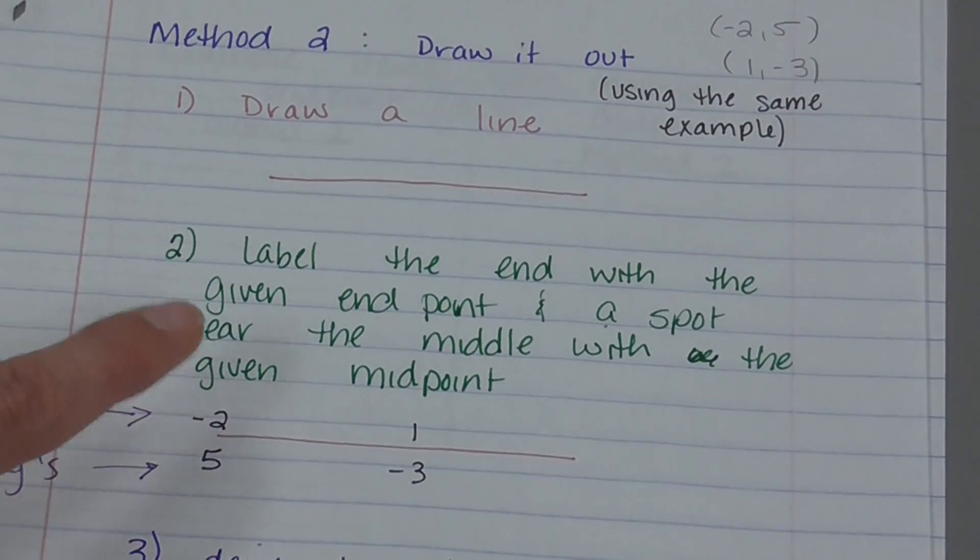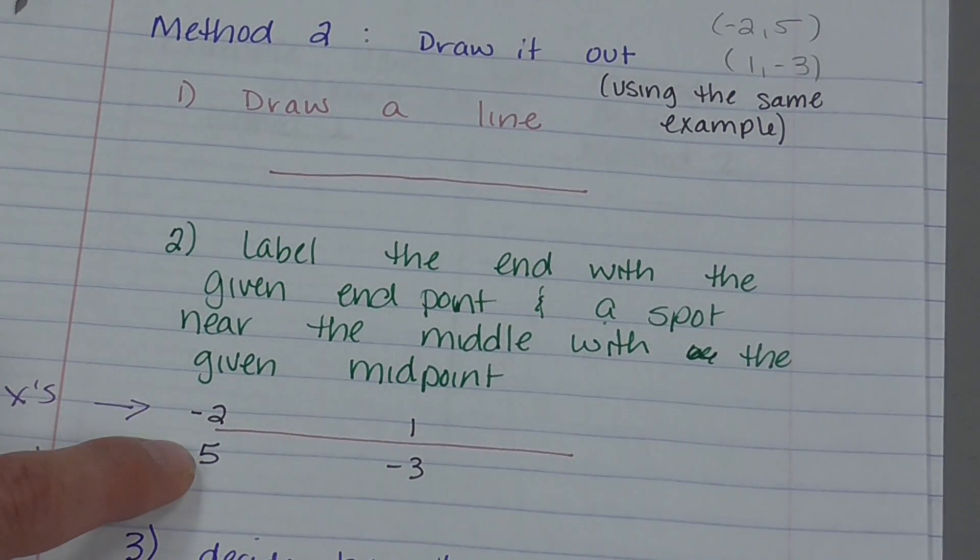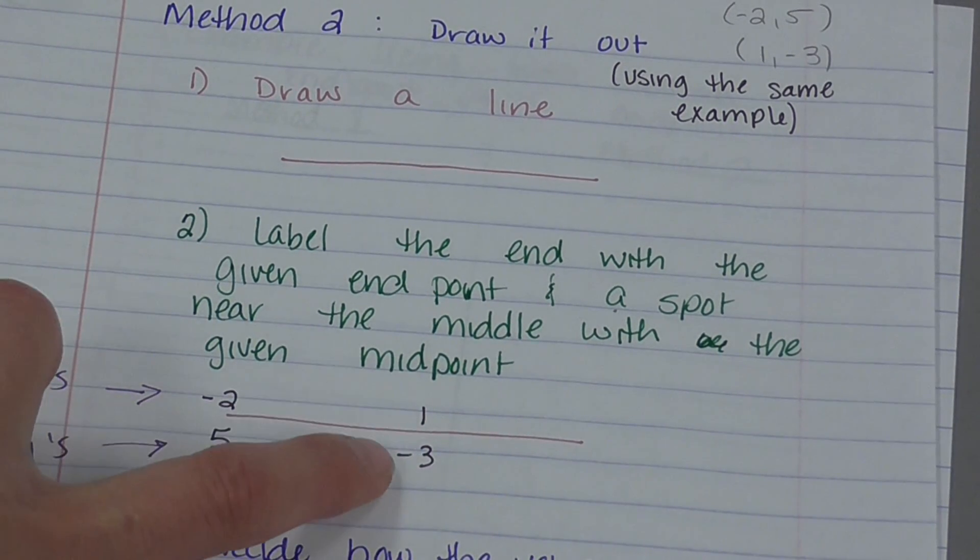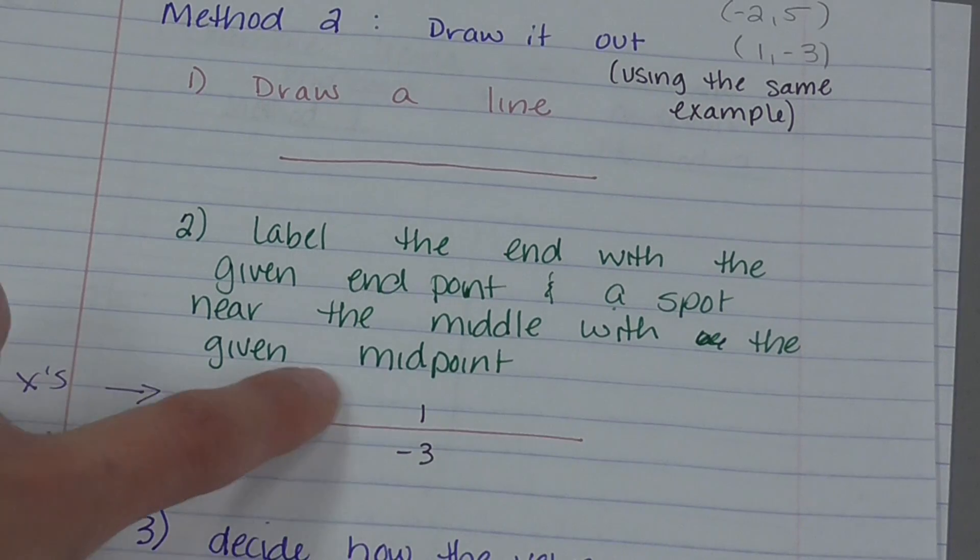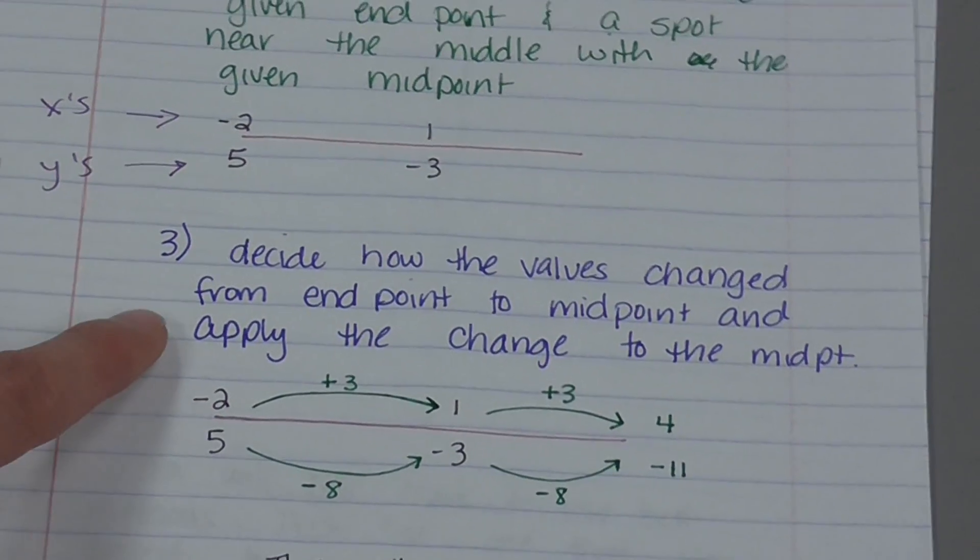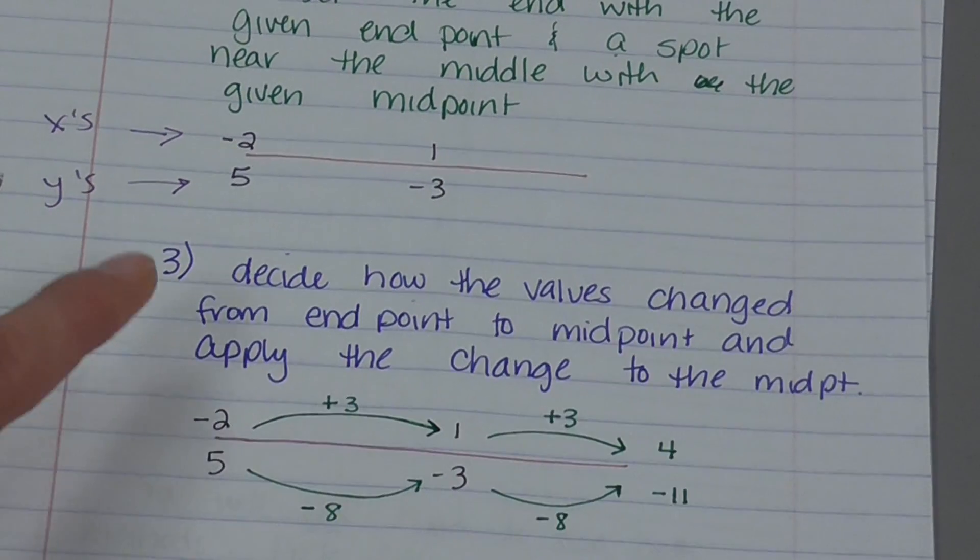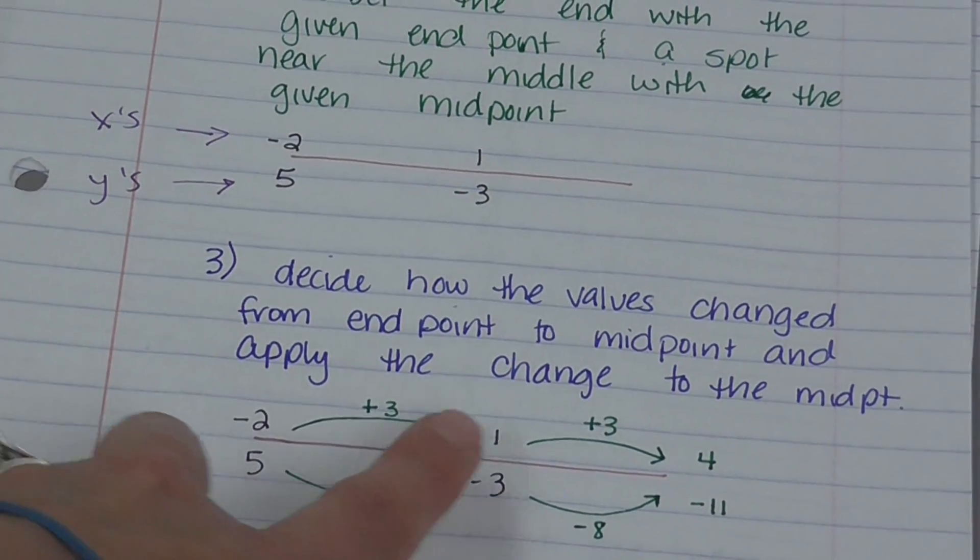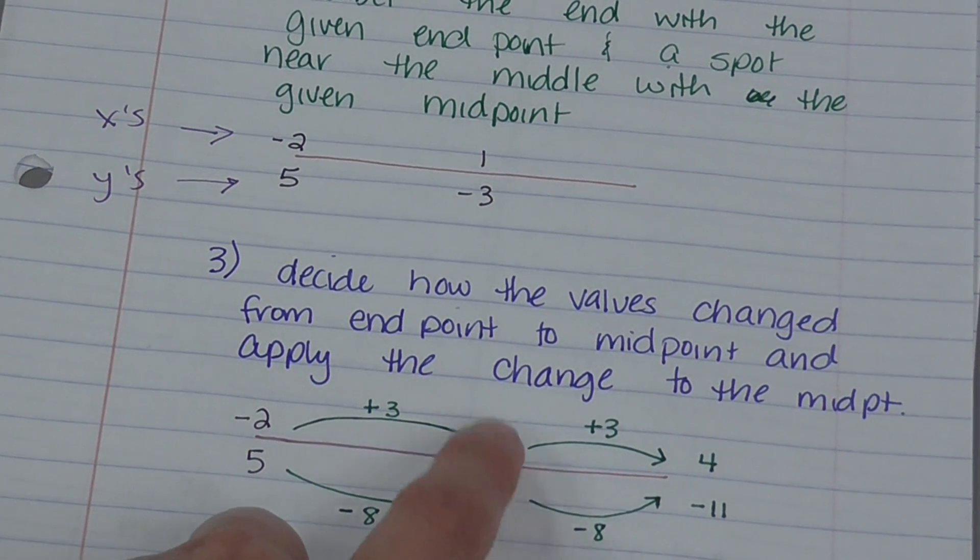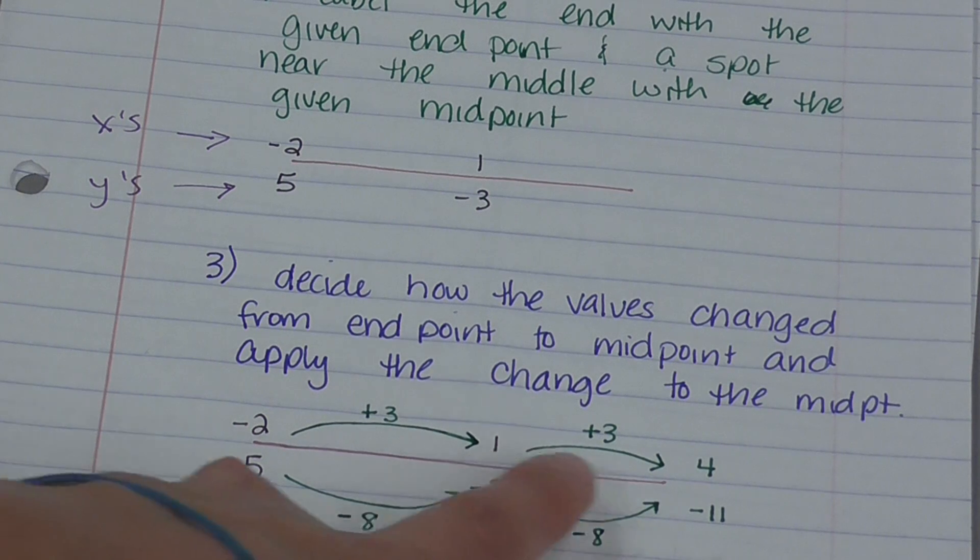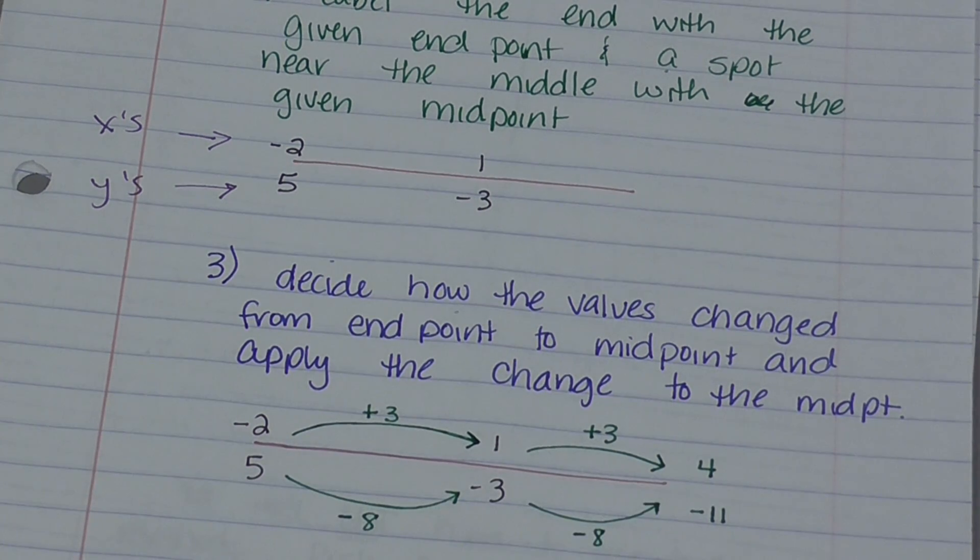Step 2 is we're going to label the end with the endpoint, negative 2, 5. And we're going to label somewhere in the middle with our midpoint, 1, negative 3. And I'm going to put my x's on top and I'm going to put my y's on bottom. Then you need to decide how the values change. So how did I get from negative 2 to 1? Well, I added 3. Then how did I get from 1, or what do I do to 1? I add 3 again. So if I had to add 3 to get to the midpoint, I add 3 again to get to the other end.